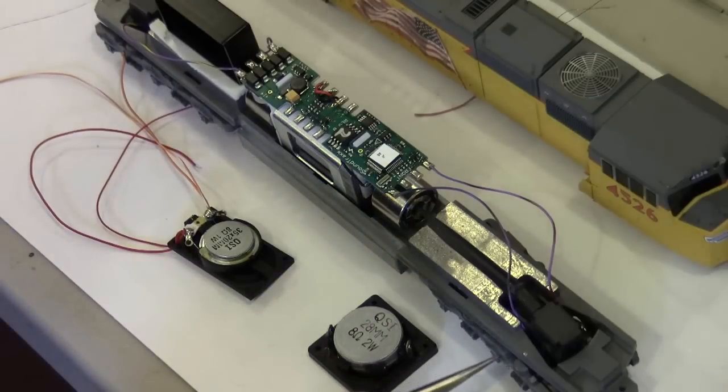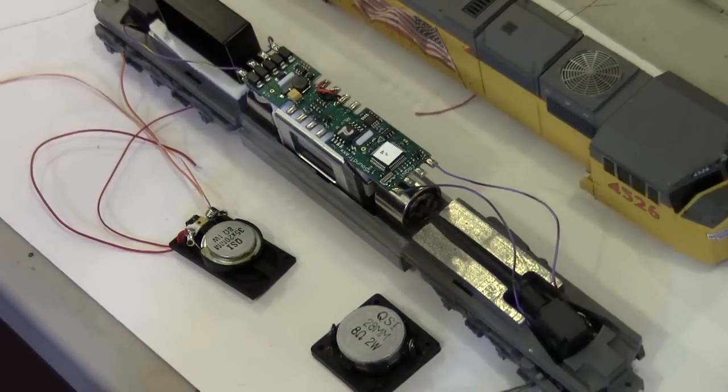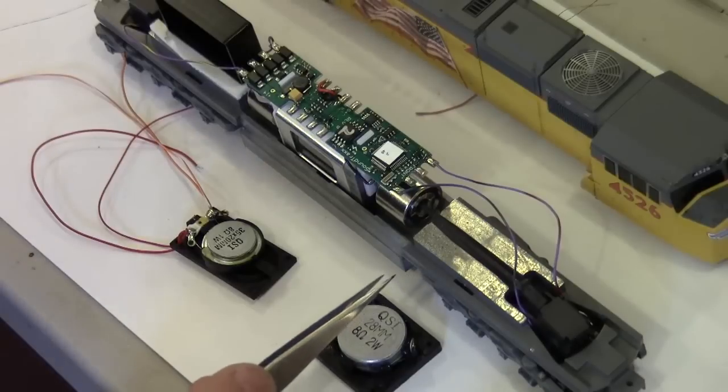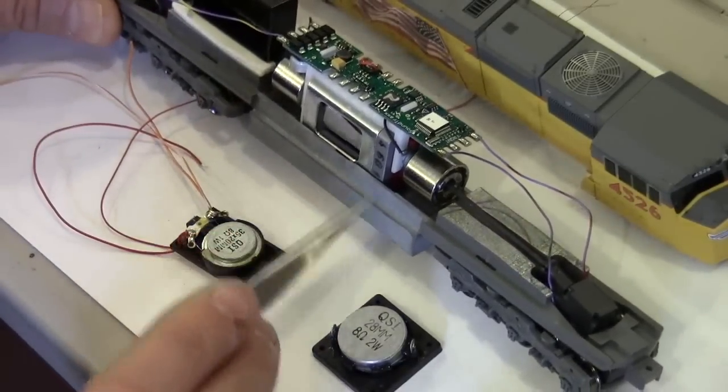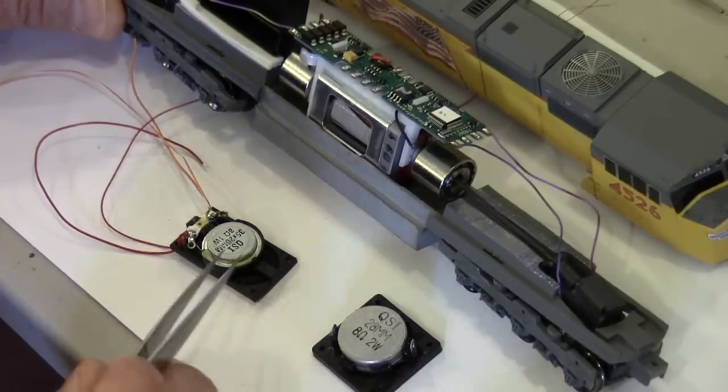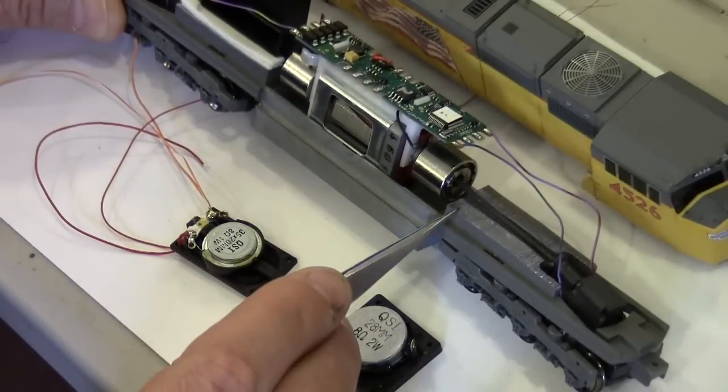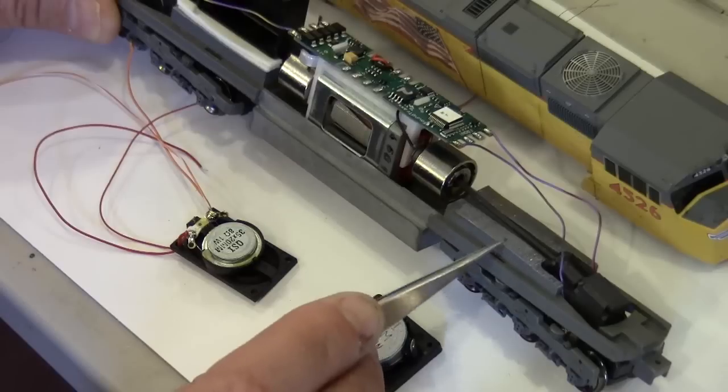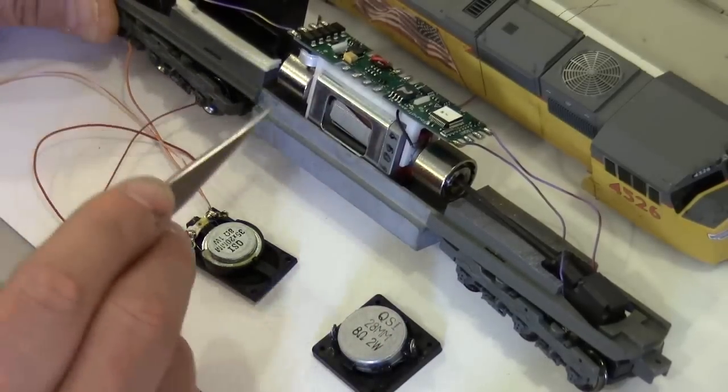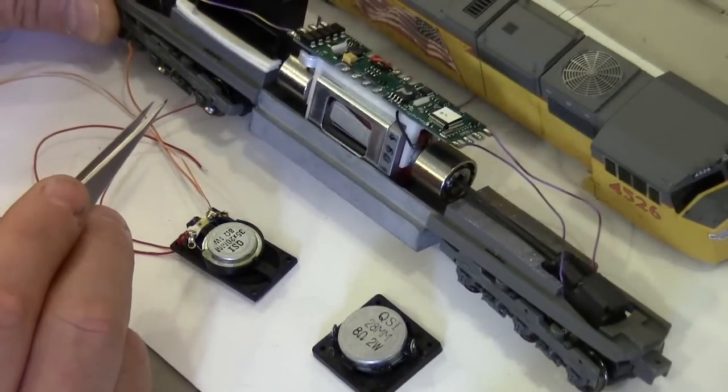When doing an install on this particular locomotive, I disassemble and remove the motor and the trucks from the frame. And then you can see here I've removed a portion of this front and rear weight in order to accommodate the wires and speakers.